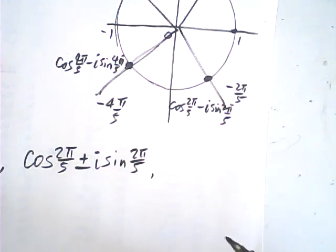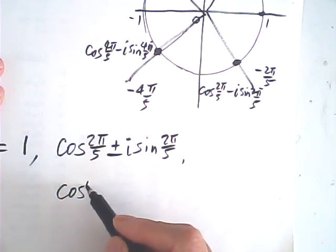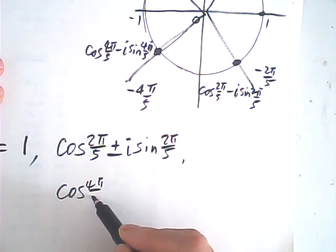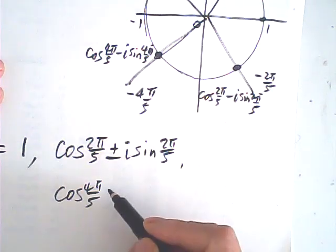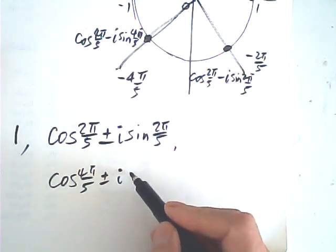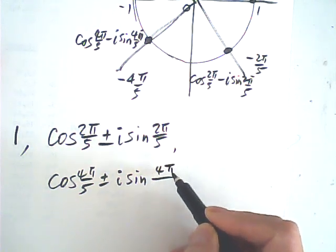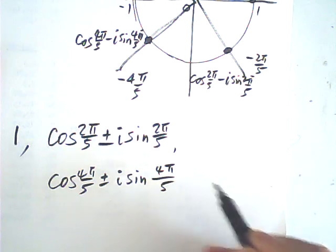And the other two is cosine 4 pi over 5 plus or minus i sine 4 pi over 5.